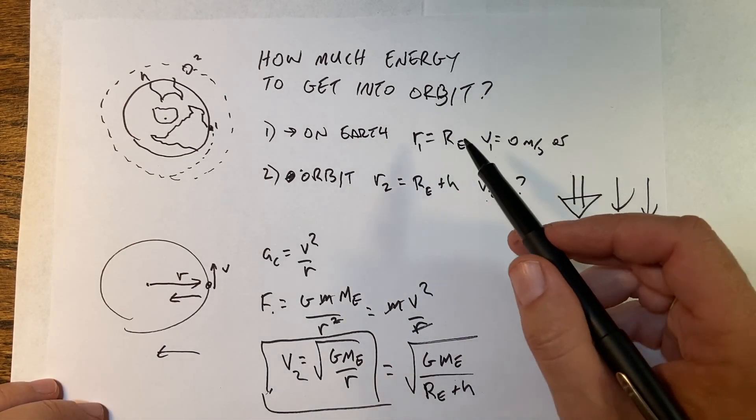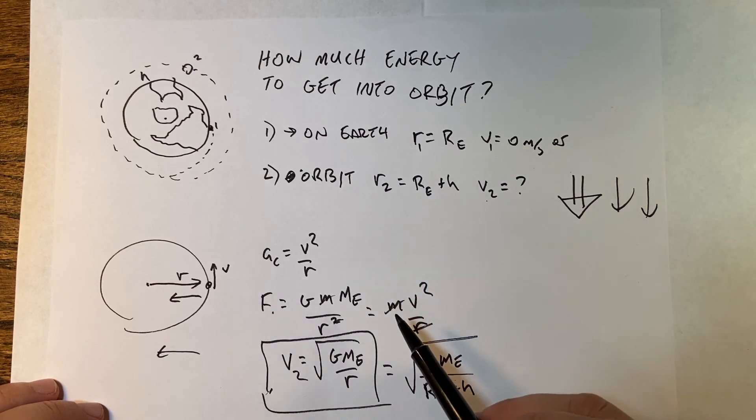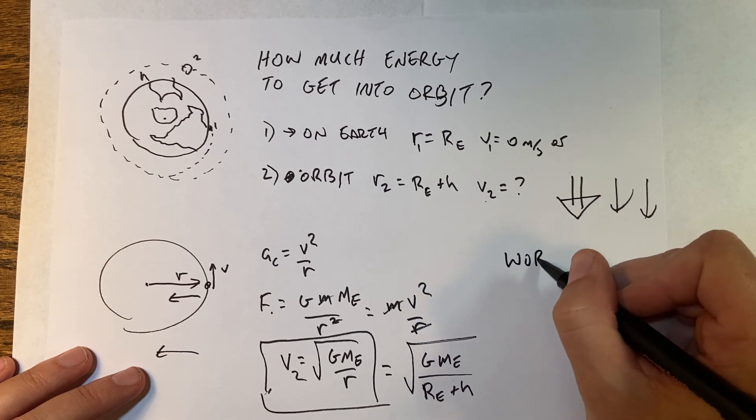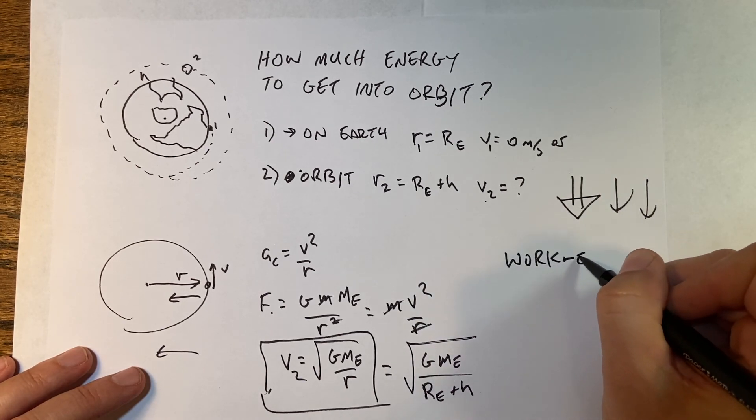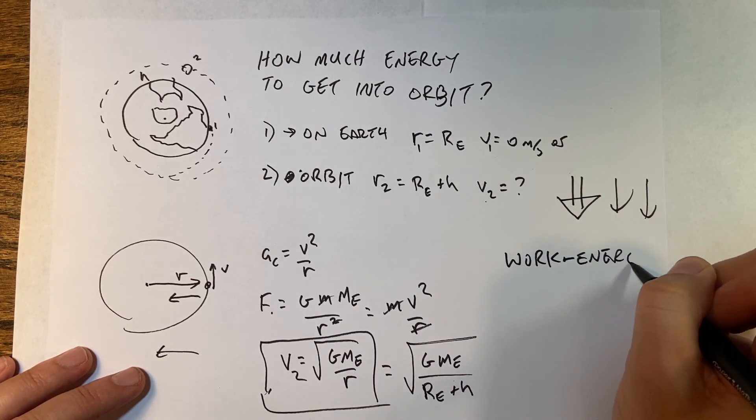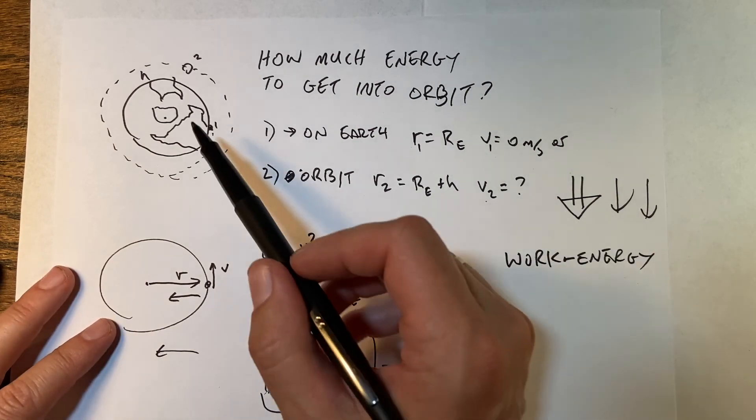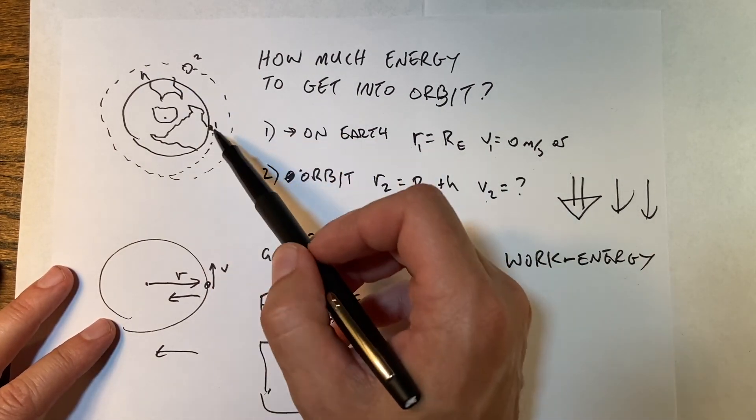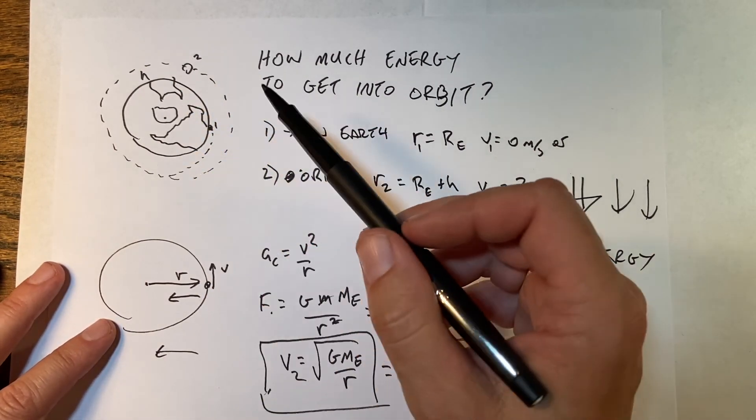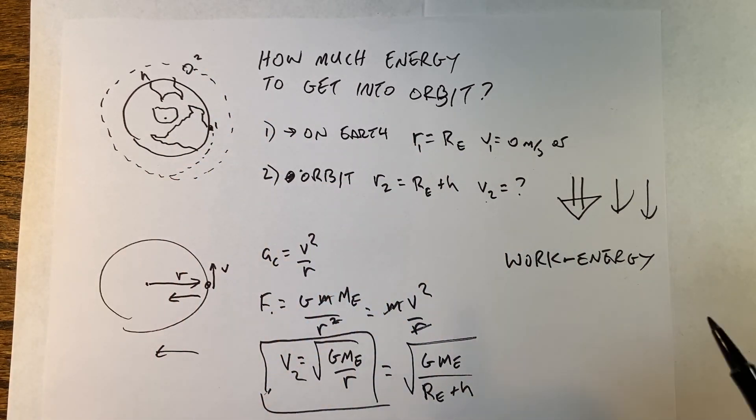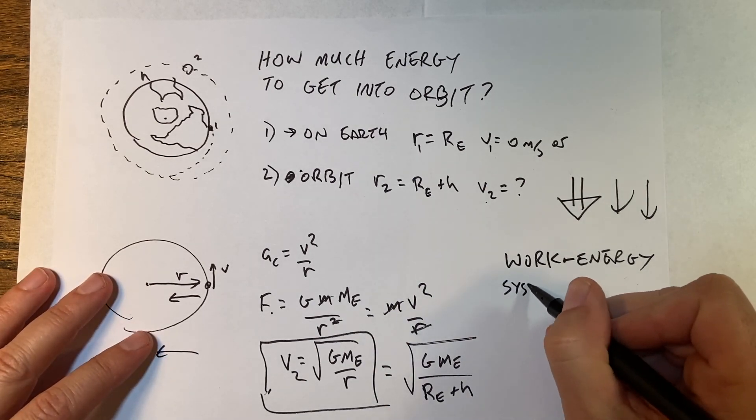That's the velocity of two in orbit. I should write this as the square root of g times me over the radius of the earth plus h. Now I know the velocity and everything I need to start doing my work energy problem. Why do we use work energy? Well one, we're looking for energy. But two, I don't really care when this gets into orbit. I just want it to be in orbit. So I have position one and position two. When you have two positions and that's all we care about, then you should use work energy.